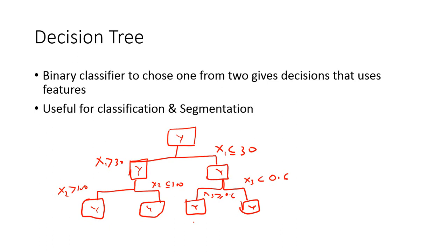The next algorithm is the decision tree, a popular algorithm. It's a binary classifier which is used to choose one from the given decisions using the features that you have been given. For example, you have a target variable Y which depends on X1, X2, X3 and so on. This is a binary variable like it has 0 and 1. Based on the value of X1, X2, and X3, you are required to select the value of Y to be 0 or 1.